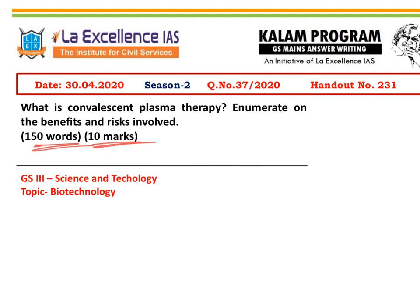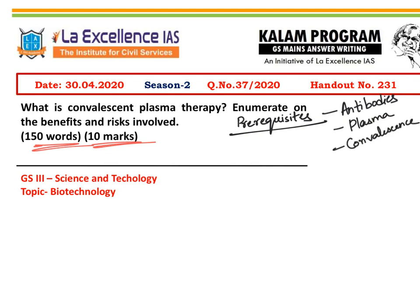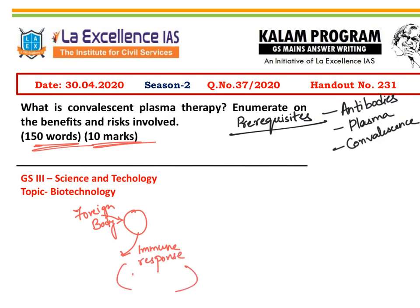If we look at the prerequisites required to answer this question — because it is a science and technology based question — one needs conceptual clarity on what antibodies are, what plasma is, what convalescence means, and how the therapy works. For example, when a patient is infected by a disease, the infection comes as a foreign body, and the patient's body gives an immune response. As part of this immune response, substances known as antibodies are produced, which try to neutralize this foreign body.